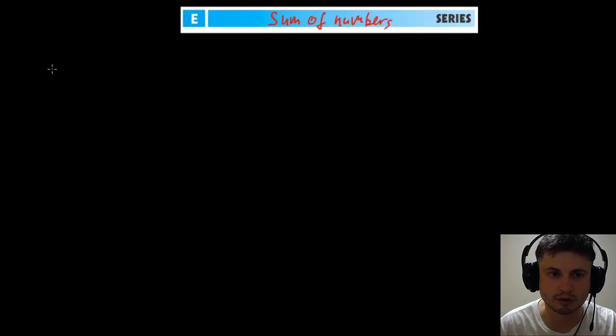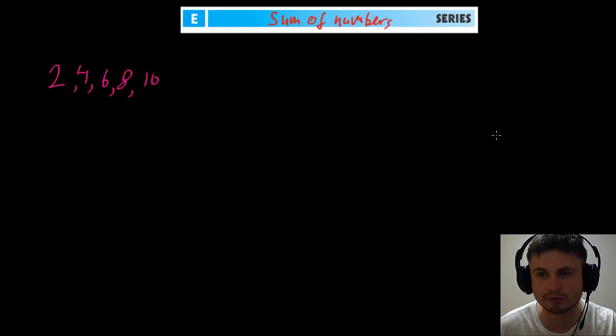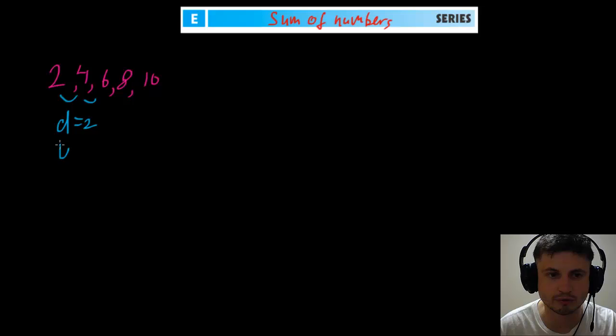Let's look at a simple example. Let's just pick five numbers: two, four, six, eight, and ten. Now this is an arithmetic sequence. If you remember from the last video, we can find the difference here. Difference here is two. u1, the first term is also two, and we have five numbers, so our n equals five.